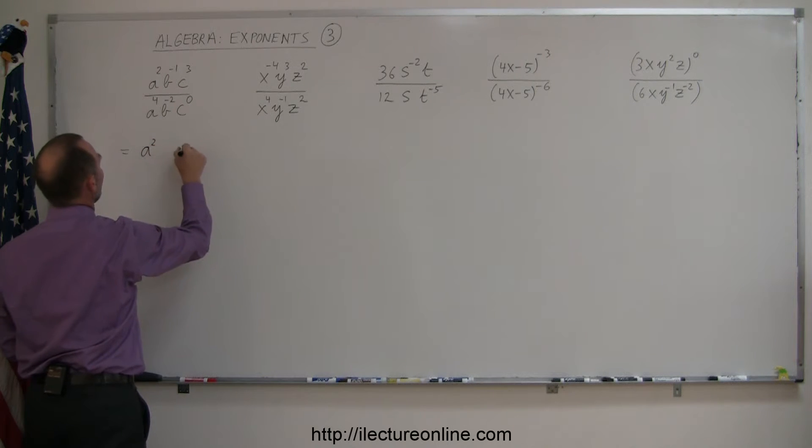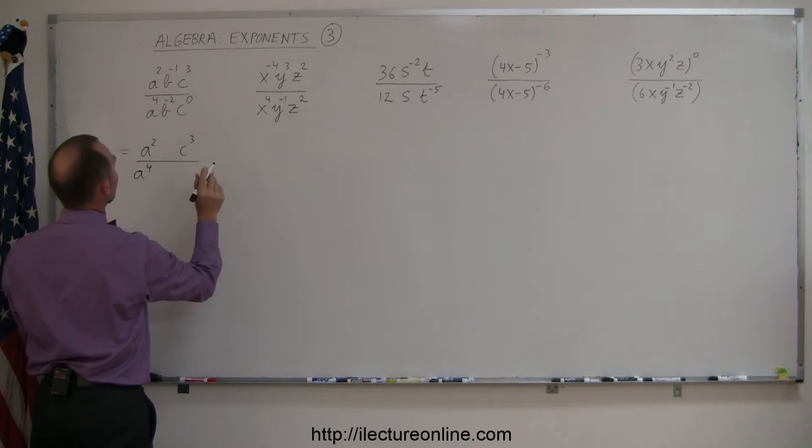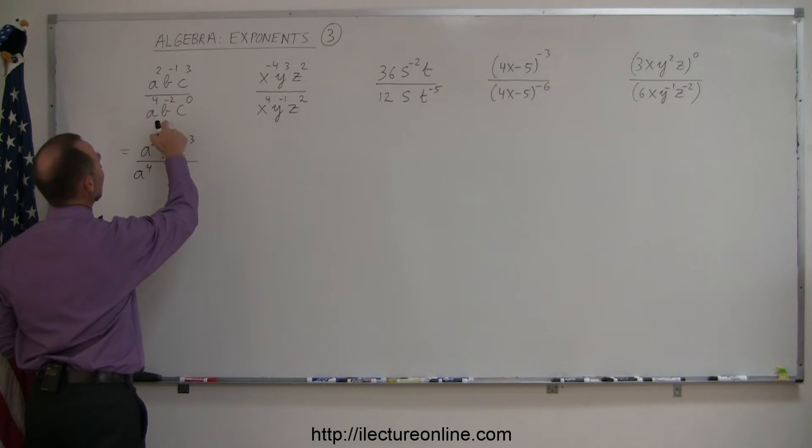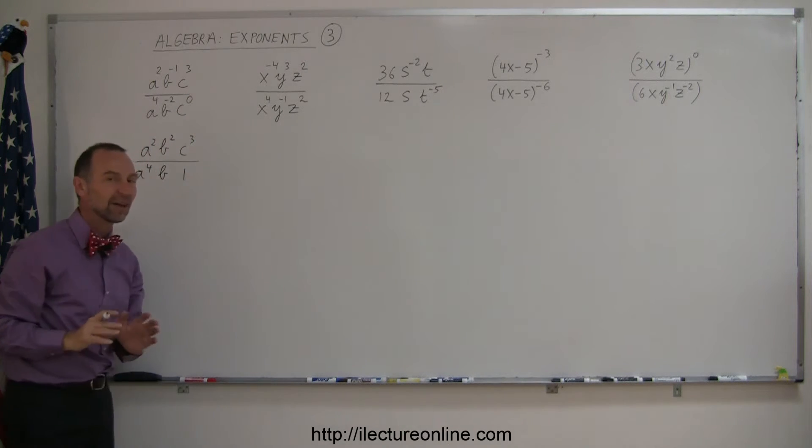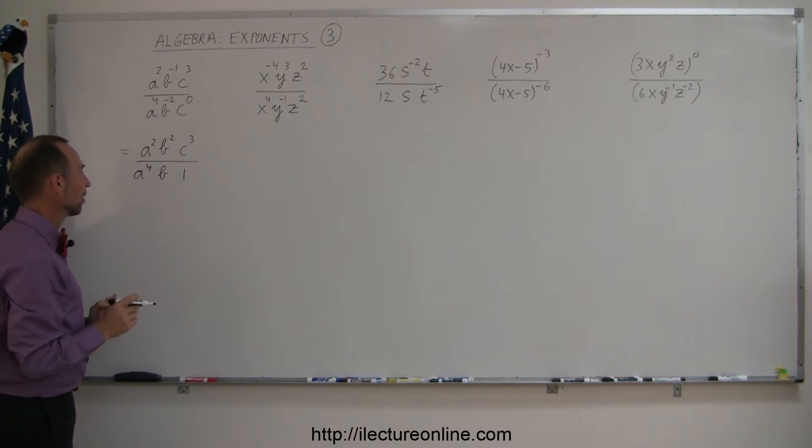So this becomes a squared, c cubed, divided by a to the fourth, and that's it. Now we have c to the zero power, so that becomes a 1. I have a b to the minus 2 power, which moves to the numerator, becomes b to the positive 2 power. I have a b to the minus 1 power, moves down, becomes b to the positive 1 power. So that's how I start off by simplifying things. Now I only have positive exponents, and the zero exponent is gone.